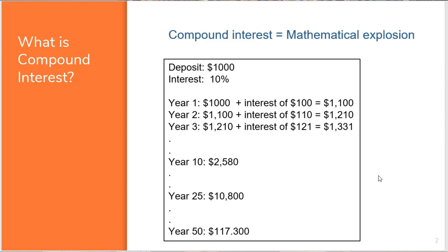Now $117,000 after 50 years sounds good, but 50 years — right now I'm in my mid-40s, so this would make me in my mid-90s where I could enjoy that. And of course this is a theoretical example because we haven't touched on taxes, inflation, and all the stuff that would actually make the $117,000 somewhat less valuable. But let's take it a couple of steps further.